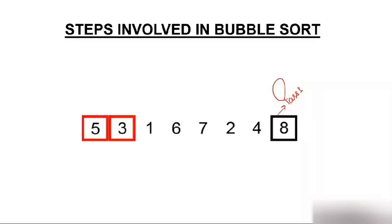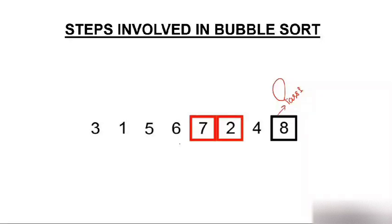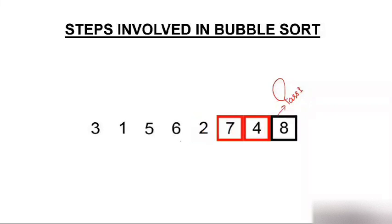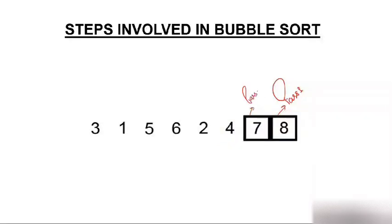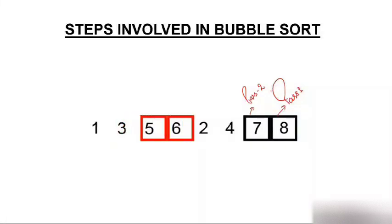This is called pass one — in the first pass the largest element takes its place. In pass two: 5 is compared with 1 and exchanged; 5 with 6, no change; 6 with 7, no change; 7 with 2, swapped; 7 with 4, swapped — so 7 takes its position. In pass three: 3 with 1, swapped; 3 with 5, no change; 5 with 6, no change; 6 with 2, swapped; 6 with 4, swapped — 6 takes its position.